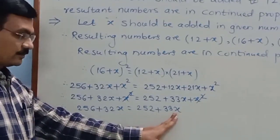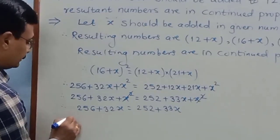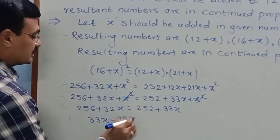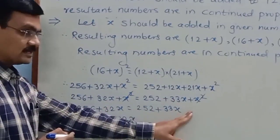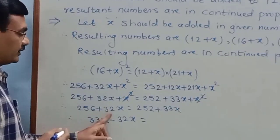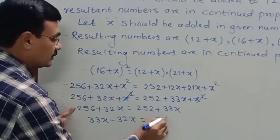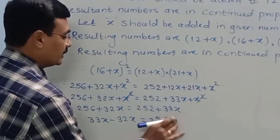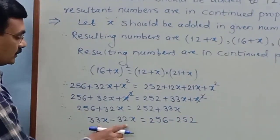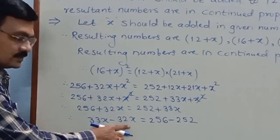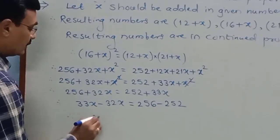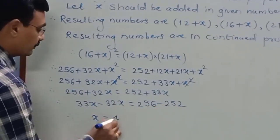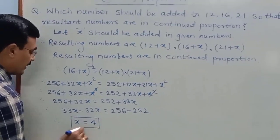To find the value of x, collect the similar terms. Transfer 33x to the left side and 256 to the right side. We get 33x minus 32x equals 256 minus 252. The difference of 33x and 32x is x, and the subtraction on the right-hand side is 4. Therefore, x equals 4.